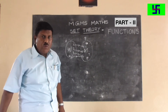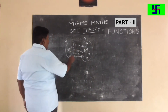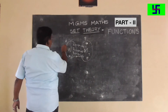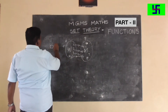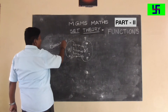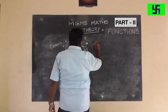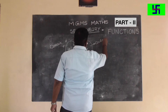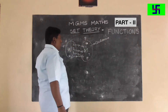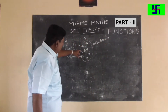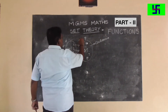Now I want to define a few terms related to a function. Set A is called the domain. Set B is called the co-domain. The elements which are mapped — these form the range.